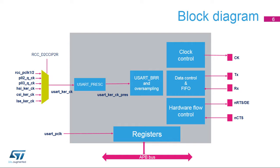TX and RX pins are used for data transmission and reception. NCTS and NRTS pins are used for RS-232 hardware flow control. The driver-enabled pin or DE, which is available on the same I/O as NRTS, is used in RS-485 mode. The clock output or CK is dual-purpose. When the USART is used in synchronous master-slave mode, the clock provided to the slave device is output on the CK pin. When the USART is used in smart card mode, the clock provided to the card is output on the CK pin.